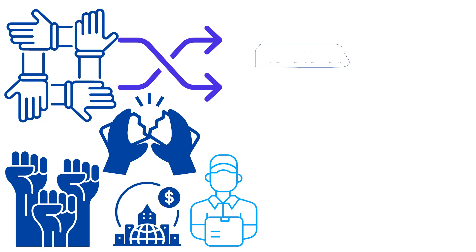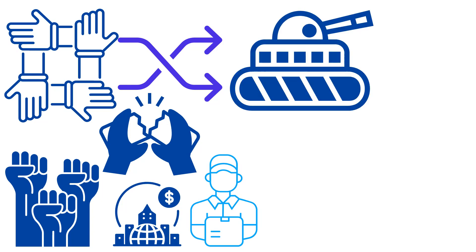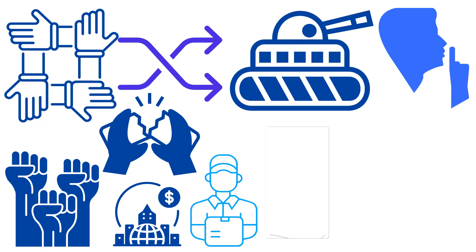The American government sent its poorest people to die in a war that had nothing to do with them during World War I. It also passed a set of rules that made it illegal for people to speak out against the war in any way. Many socialist leaders at the time were jailed for saying what everyone already knew — that World War I was an unfair, imperialist war.